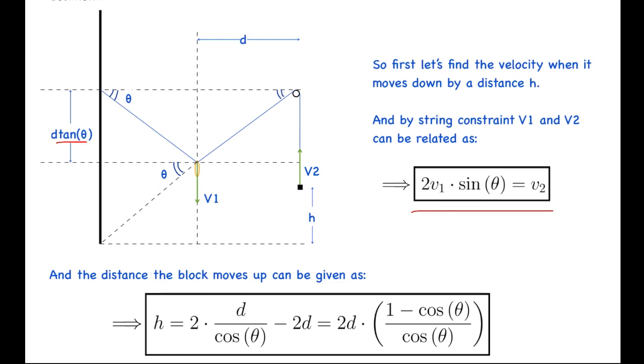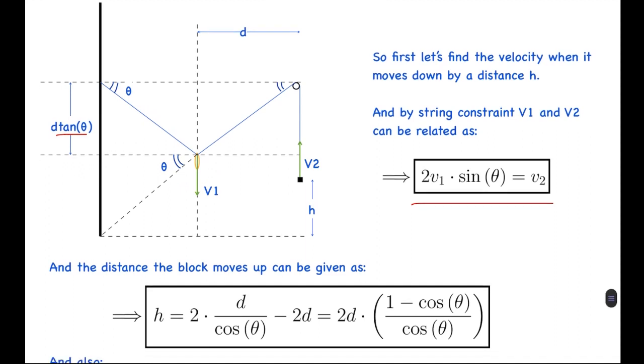So basically, if it was a bead it would have been v₁ sin θ = v₂, but here twice the amount of thread is being required because it is increasing this thread and also this thread. That is one way you can see it. The other way you can see it is by